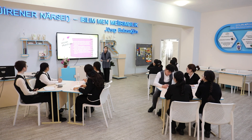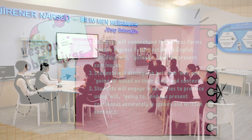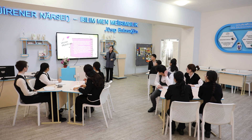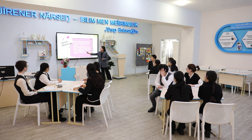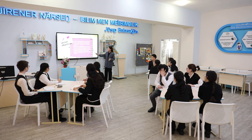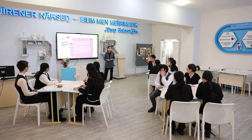First of all, I will introduce you to the lesson objectives. The first: students will comprehend various forms used to express future actions in English, including will, going to, the present continuous tense, and also present simple tense. The second: students will distinguish between will and going to based on usage and context. And the last one: engage in activities and practice with will and going to forms.